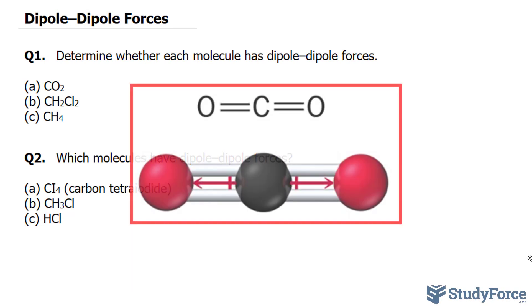On your screen, you can now see a molecule of carbon dioxide, and it's assumed that you can figure out the Lewis structure, and from that, form the molecular shape. We've already done videos on how to do that, using the VSEPR theory.